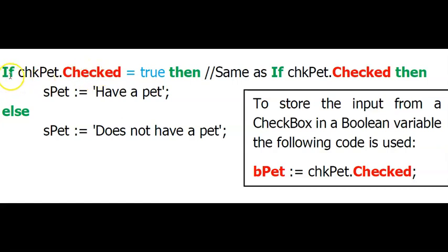So now I can use it in my If Statement and I can say, Is the object CHKPET, the .checked property, is it true? If it is, then maybe we count it. Maybe we ask them how many pets they have. In my example, I'm just storing here SPET as you have a pet.